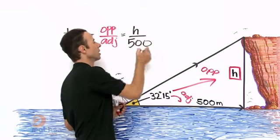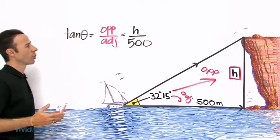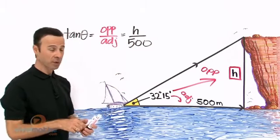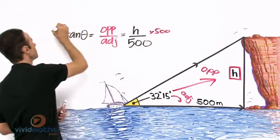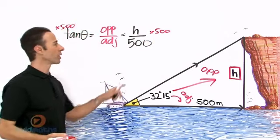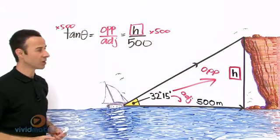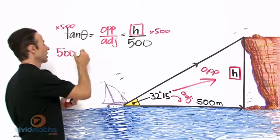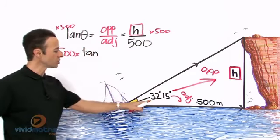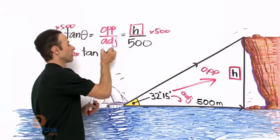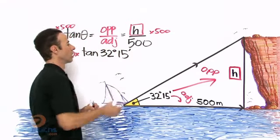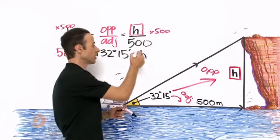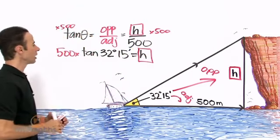What we need to do is multiply both sides by 500 so we're left with h by itself. We're looking for h—we want that h all by itself. So it's 500 times tan 32 degrees 15 minutes, which equals h, the height of the cliff.